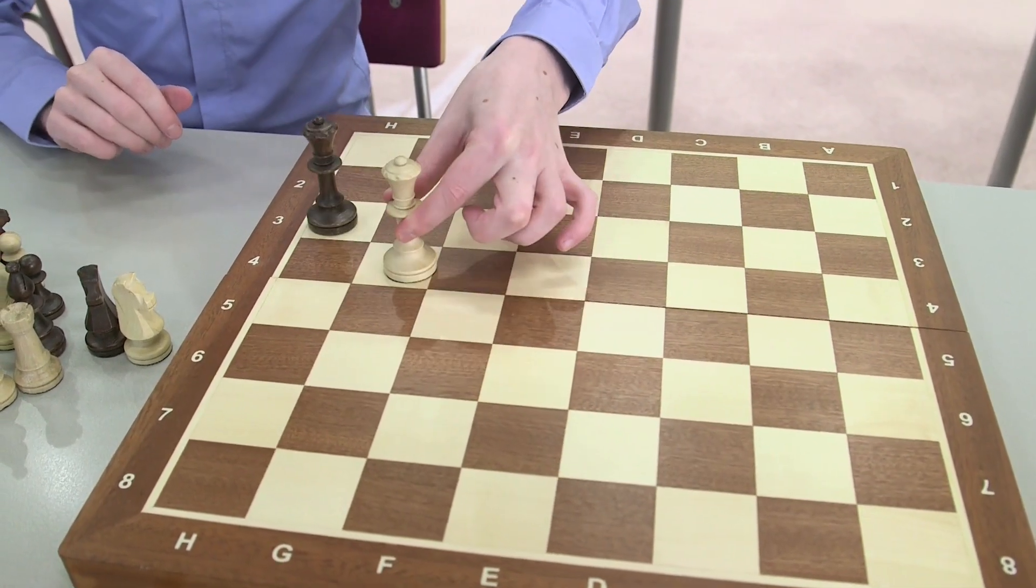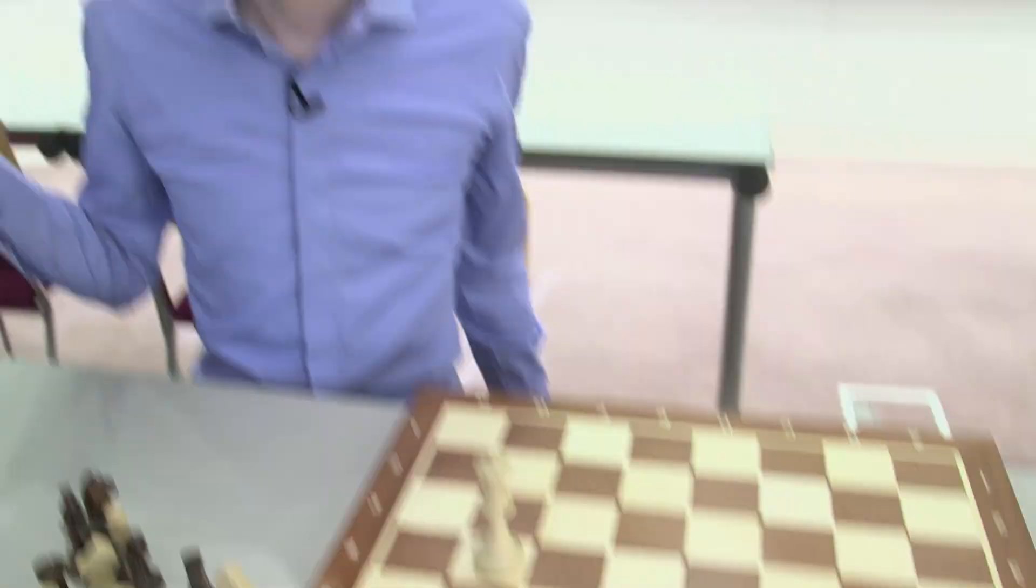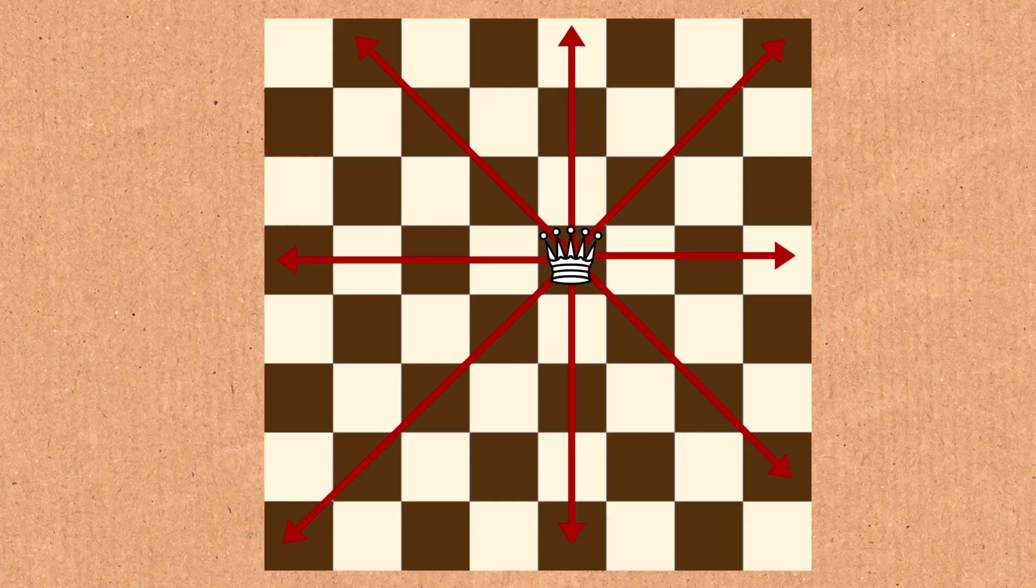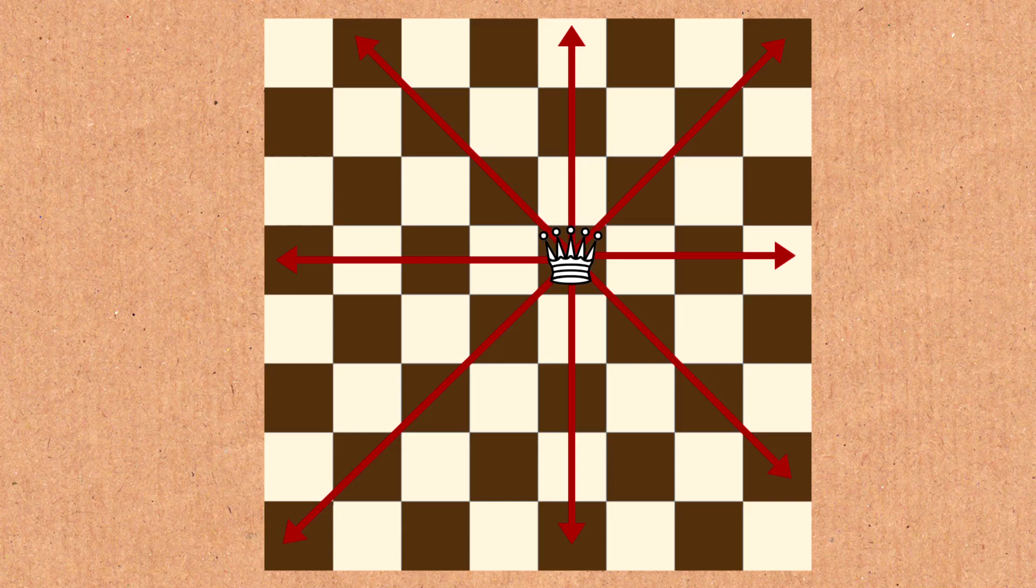any number of squares. And if there's another piece in its way, it takes it. So that's how a queen moves. Diagonally up and down, left and right.